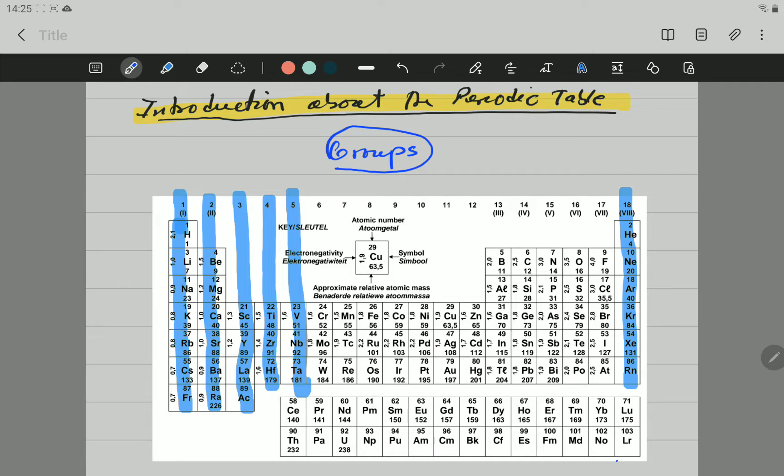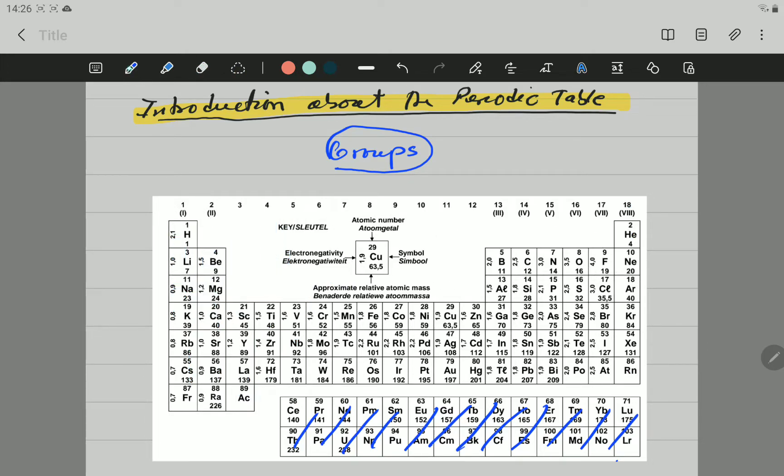Note, this table here at the bottom, we are not going to use it. So, you can ignore that part of the Periodic Table for now. We are going to use the other part of the Periodic Table. So, those elements are in that specific group. The groups are all there on top. You can see the numbers. Here, on top, you can see the numbers of the groups.